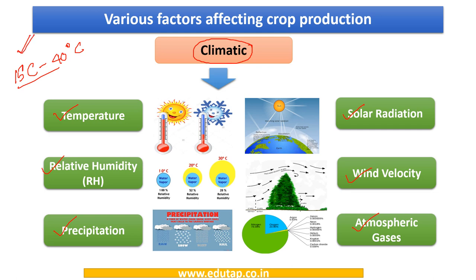Relative humidity is the amount of water present in the air compared to the maximum amount the air can hold. For example, if relative humidity is 60%, it means 60 units of water are present out of a possible 100, leaving scope for 40 more units to be added. The optimum range of relative humidity for the growth of crops is 40 to 60%.